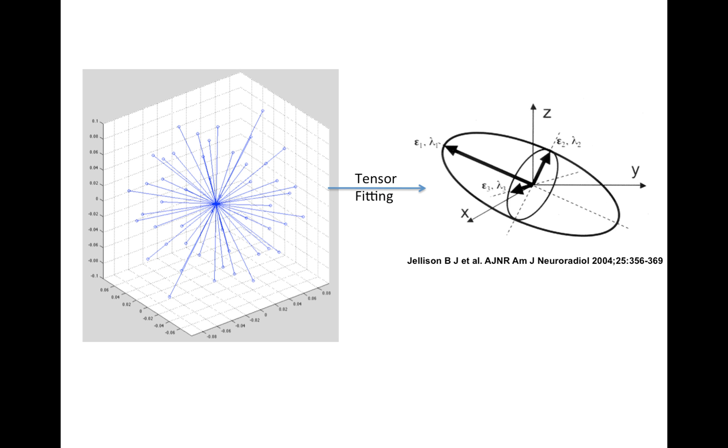One way to do dimension reduction is to summarize a diffusion profile using a model. In this case, we can use a tensor model. And it reduces the size of the high dimensionality of the data, but it also reduces noise since we're fitting the data to this model.